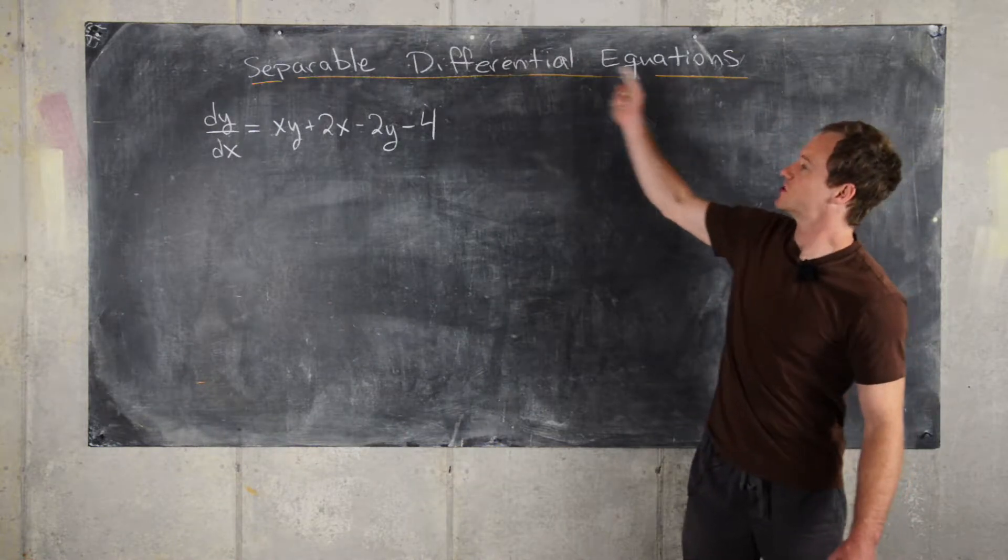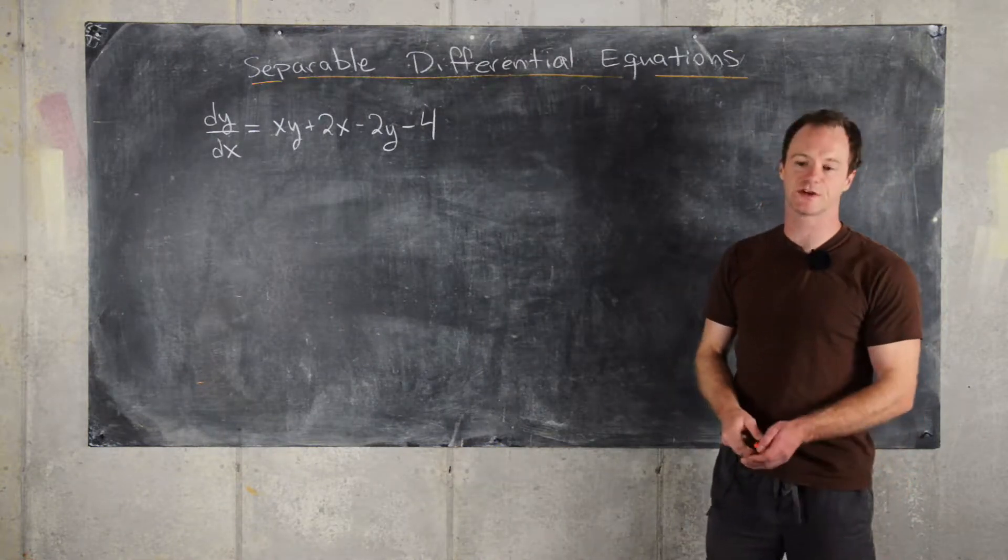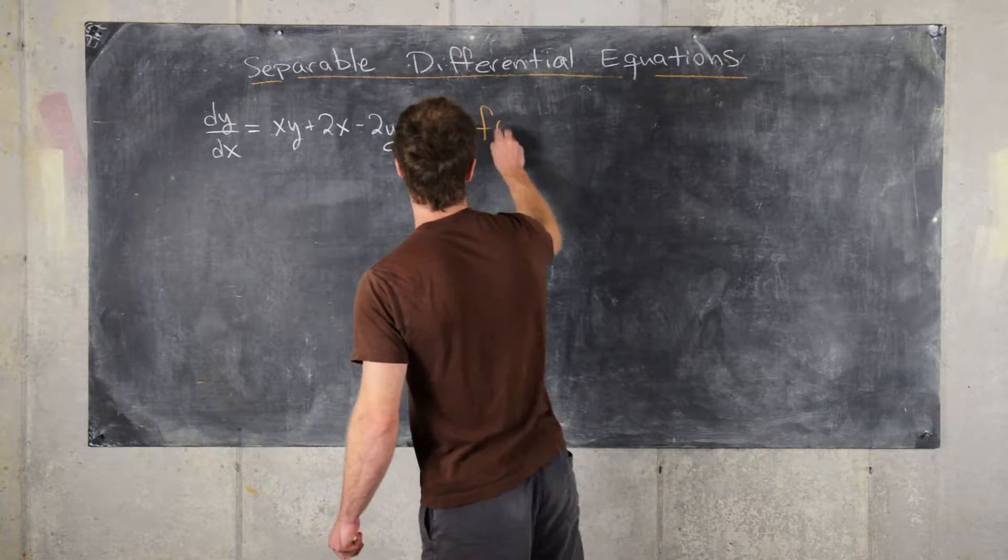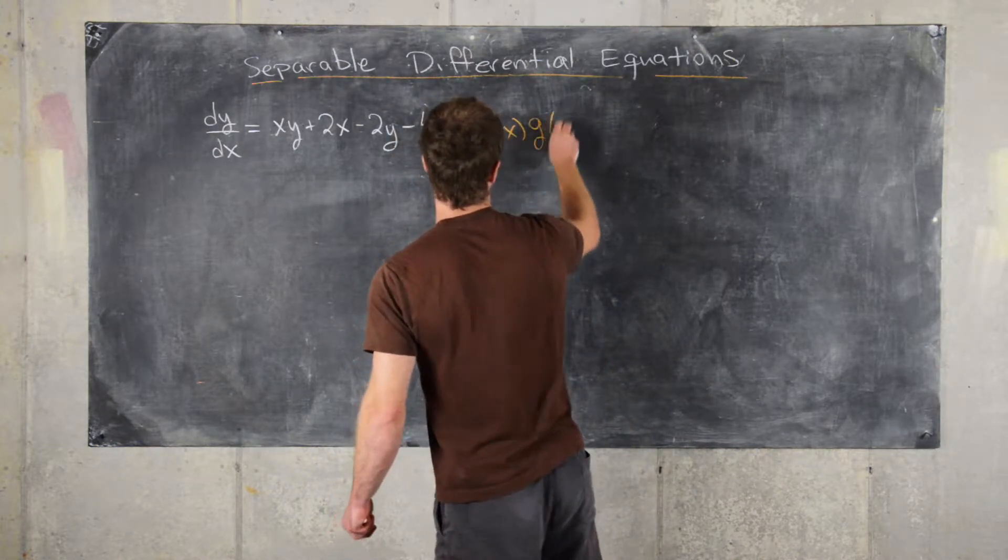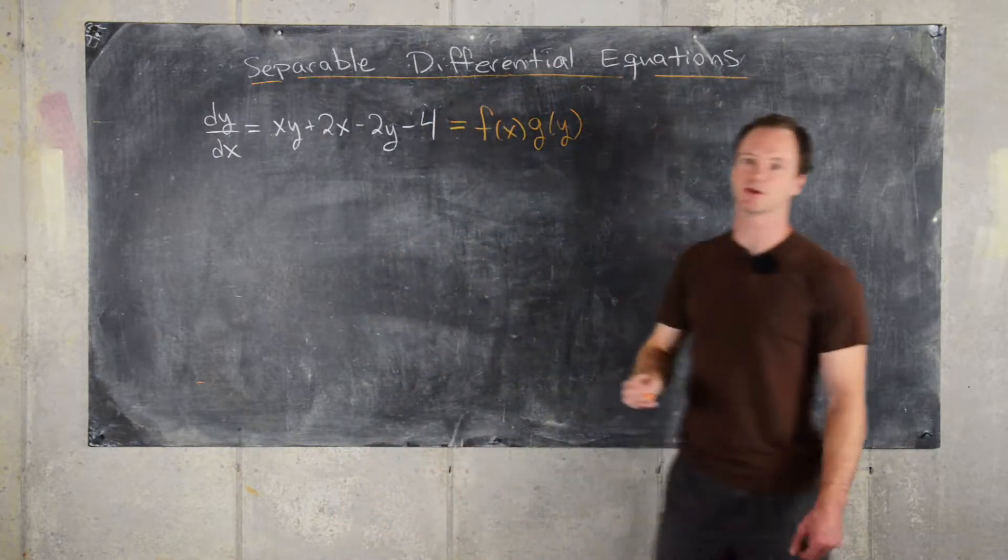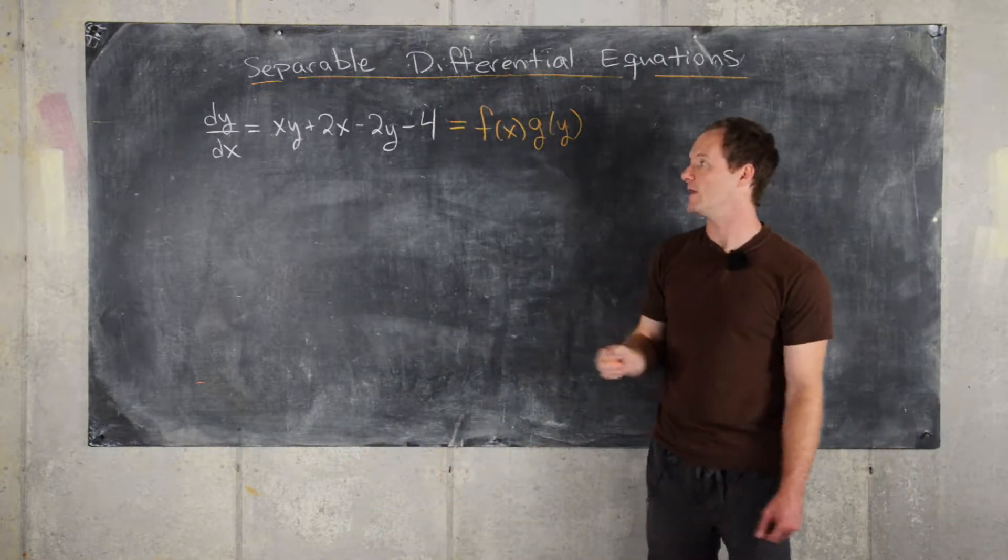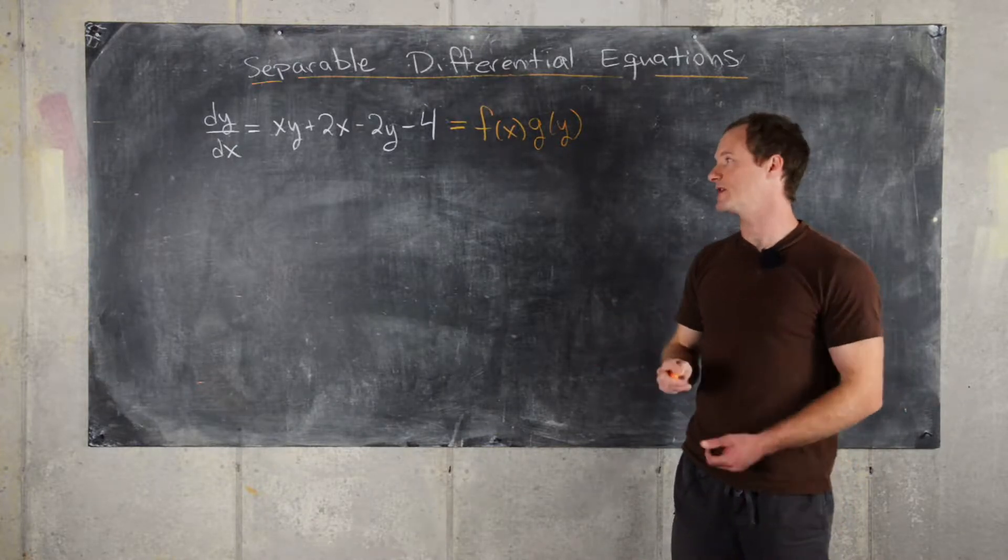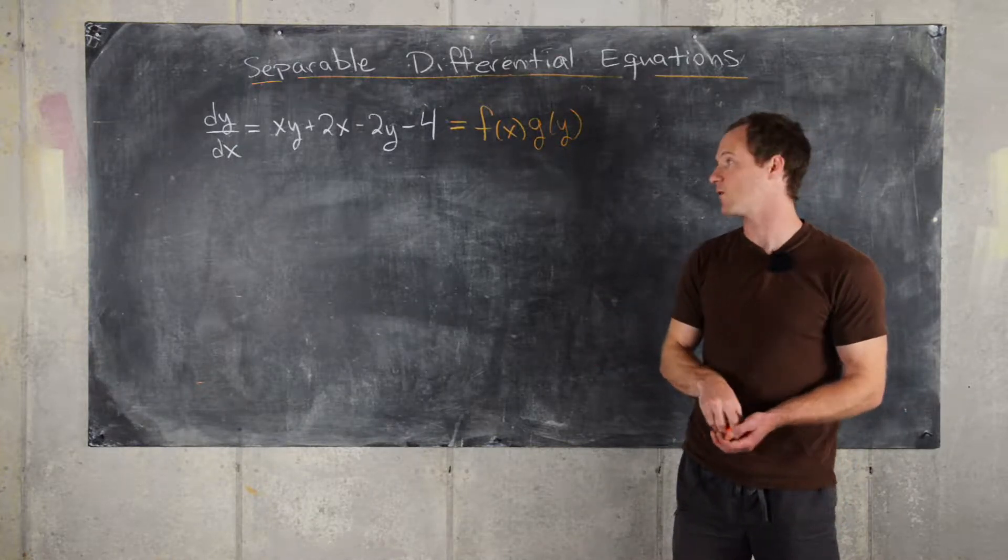I've mentioned at the top that this might be a separable differential equation. Let's recall, in order for this to be separable, we need it to be the product of a function of x times a function of y. At the moment, this is not in that form, but maybe we can manipulate this algebraically to get it into that form.